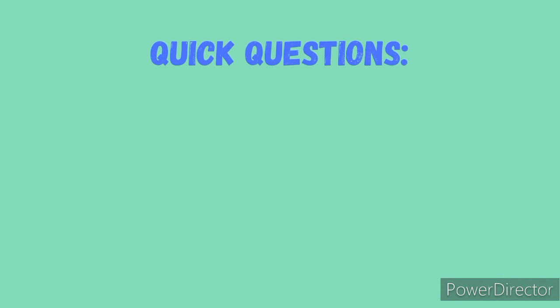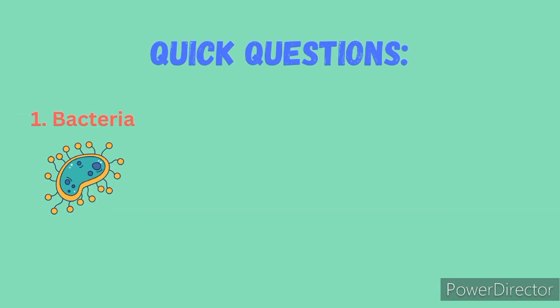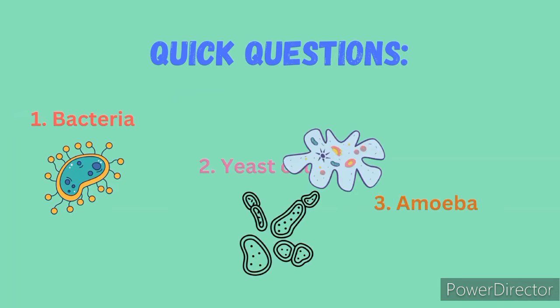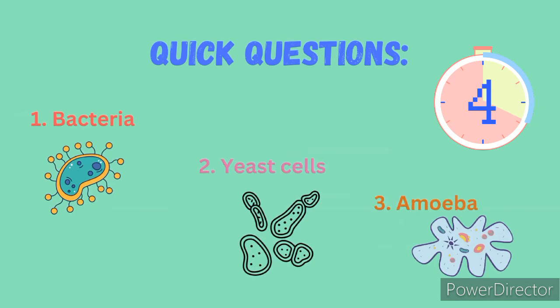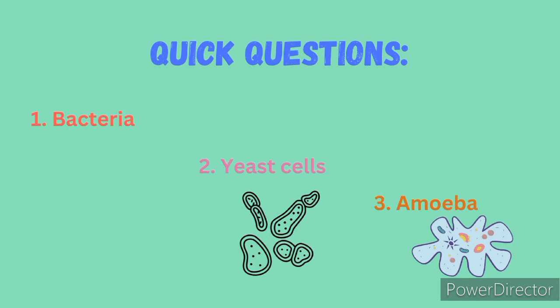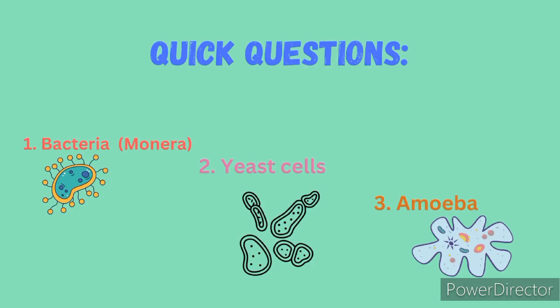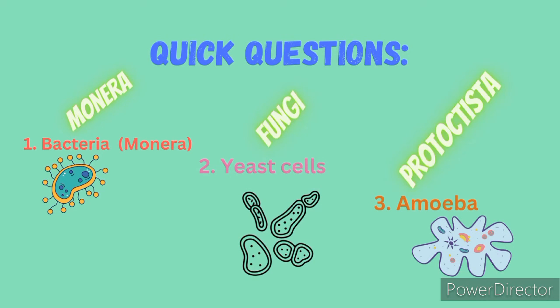Let's try out these quick questions and test ourselves. Place the following organisms into their respective kingdoms: bacteria, yeast cells, and lastly the amoeba. The bacteria belong to kingdom monera, yeast cells to fungi, and lastly the amoeba belongs to kingdom protocytista.